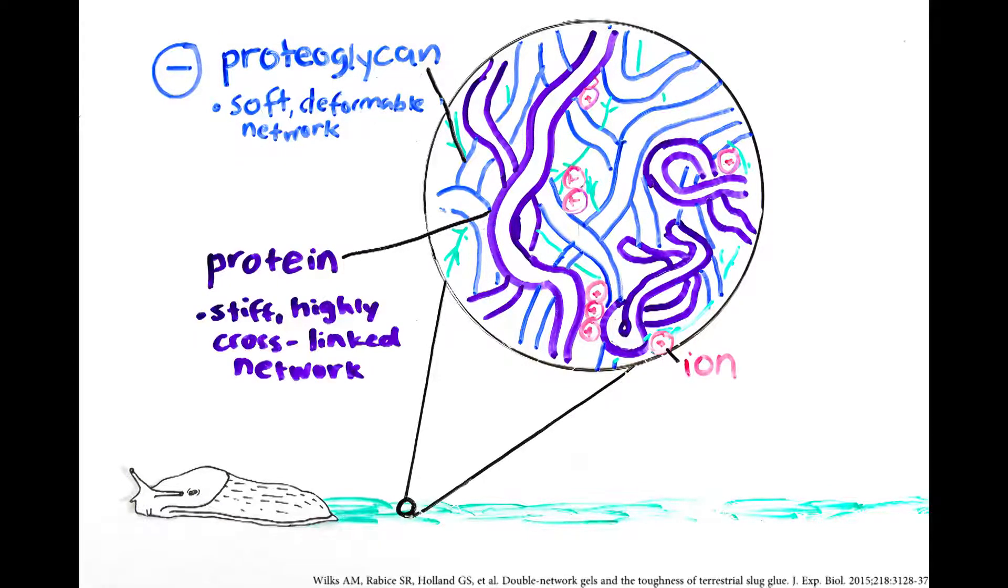The proteins form a stiff, highly cross-linked network with a net positive charge. Electrostatic attractions between the positively charged proteins and the negatively charged proteoglycans, in addition to the double network containing both highly linked and deformable substances, give the slime its strength.